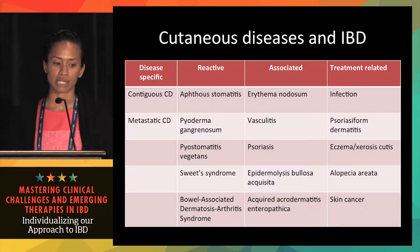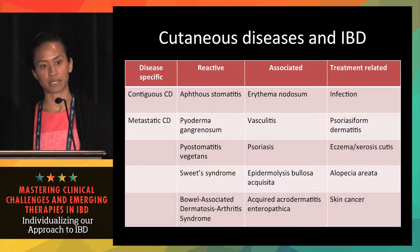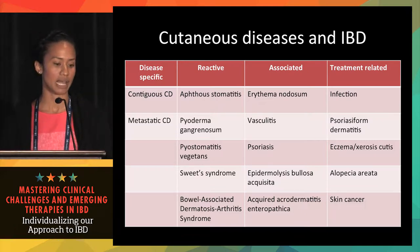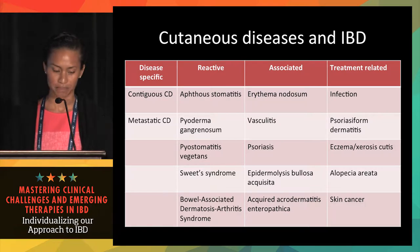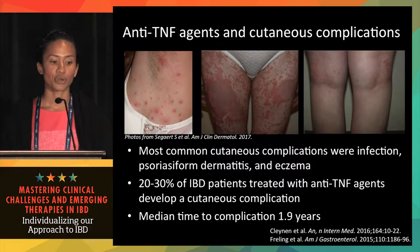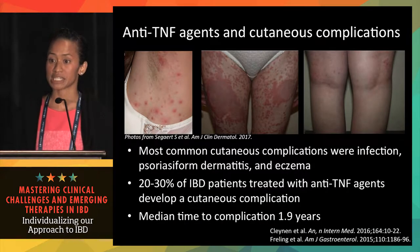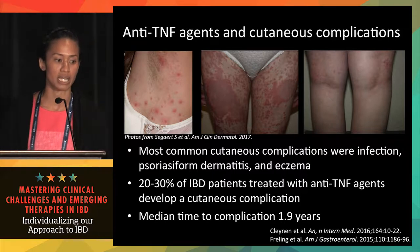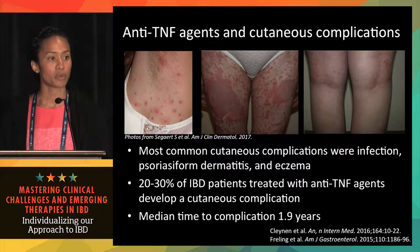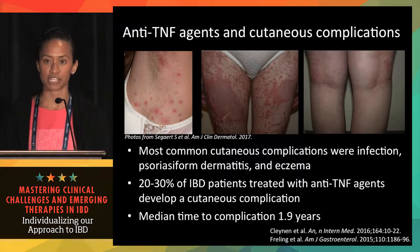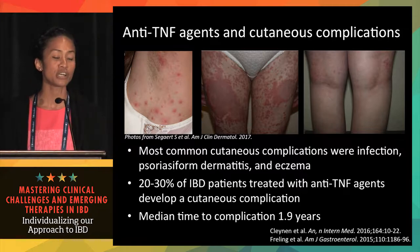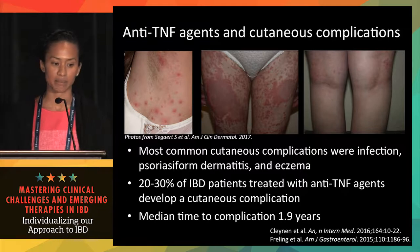Today I'm focusing on treatment-induced skin disease, specifically anti-TNF therapy and psoriasiform dermatitis, and then pyoderma gangrenosum. Cutaneous complications are very common in anti-TNF therapy, with about 20 to 30 percent of patients experiencing some sort of complication. The most common ones are infection — typically staph or strep — folliculitis or impetigo, psoriasiform dermatitis, and eczema.